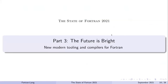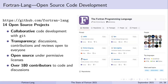We have our Fortran-lang organization on GitHub where we currently have 14 open-source projects. This includes our core projects of the Fortran Standard Library, the Fortran Package Manager, and the fortranlang.org website. This is a place where we can publicly and collaboratively develop these projects using the Git version control system. All of these projects are open-source under permissive licenses, and we have over 180 contributors to the code and discussions across all of these projects. We're always looking for new contributors on our projects.